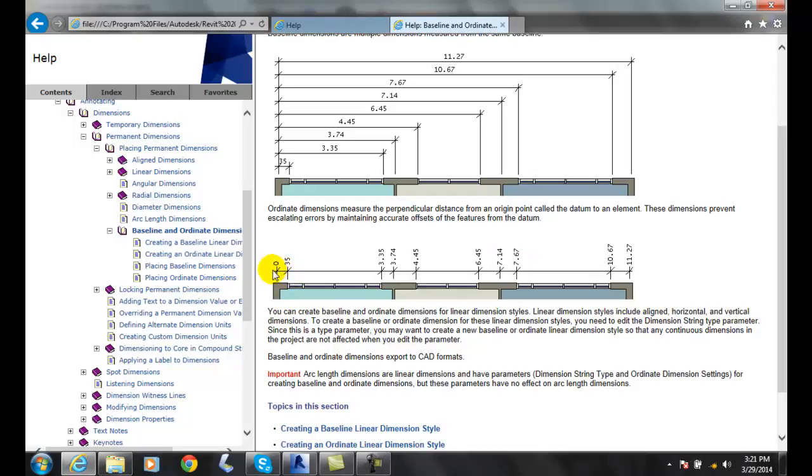So we have starting over here at zero and we have three and a half up here, and then we go over here to three point three five. So it's stacked in a line, and everything is a nice chain dimension.